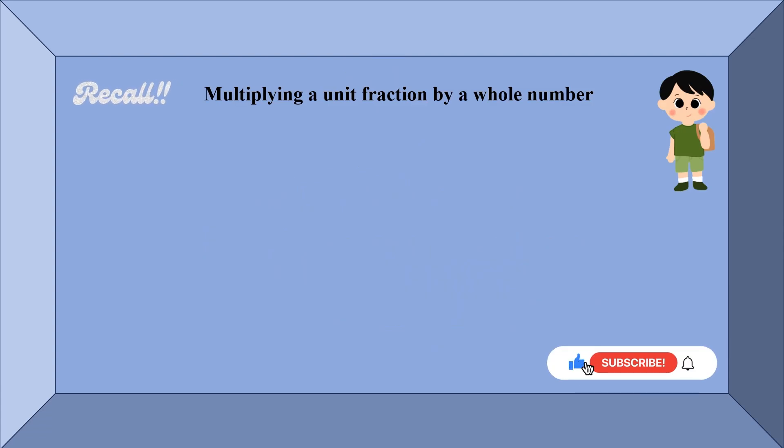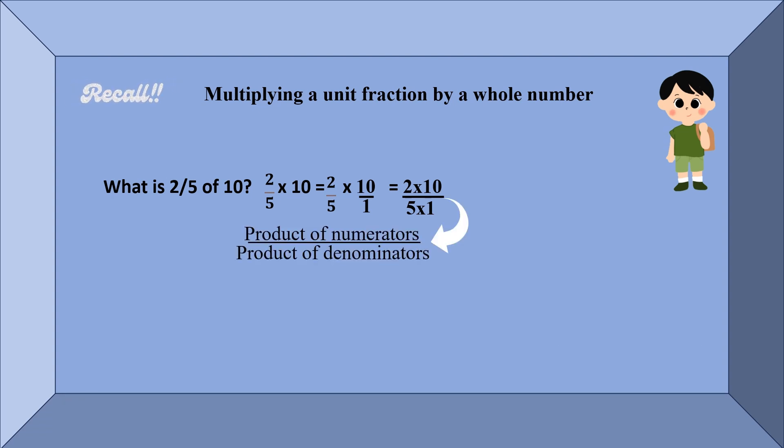Let us recall multiplying a unit fraction by a whole number. Let us take the same example: what is 2/5 of 10? Here we do 2/5 times 10, which is equal to 2/5 times 10/1. We write 10 as a fraction and we get 2 times 10 by 5 times 1, that is product of numerators upon product of denominators, and it comes out to be 20/5, which is equal to 4.